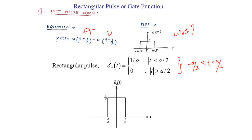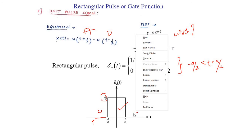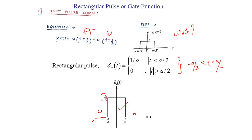Next is the rectangular pulse, also called the gate function or unity pulse signal — all three names refer to the same signal. A pulse has some width, meaning the signal exists over some interval and is 0 beyond that interval. Here, the signal has some amplitude between −A/2 and A/2, and is 0 outside that range, giving it a rectangular shape.